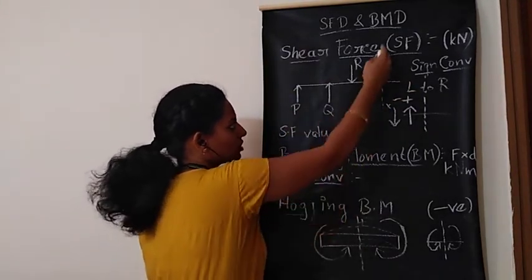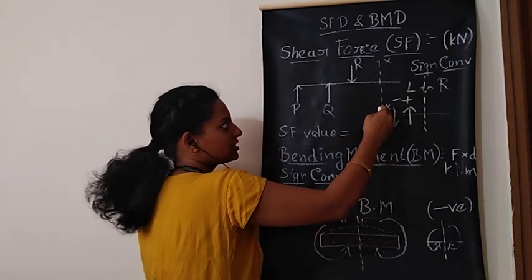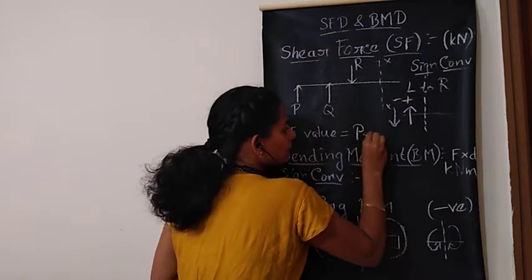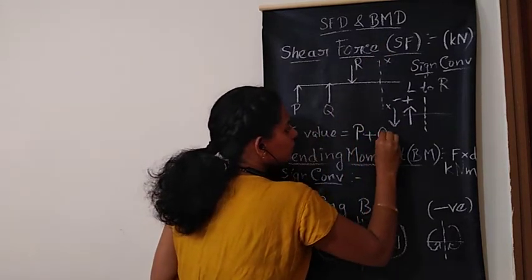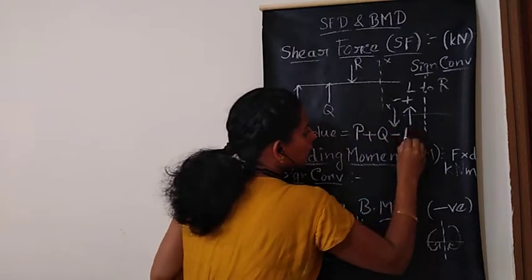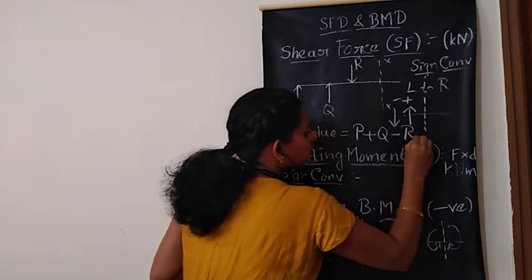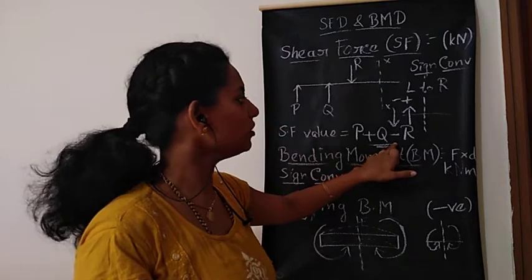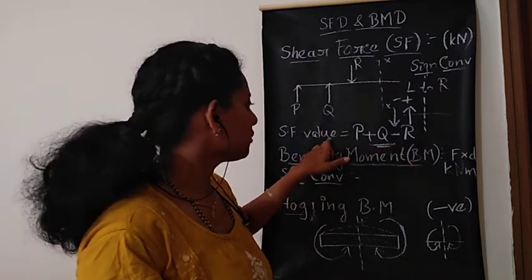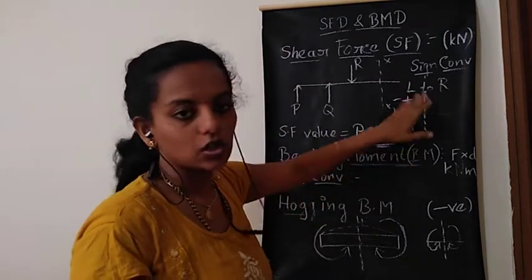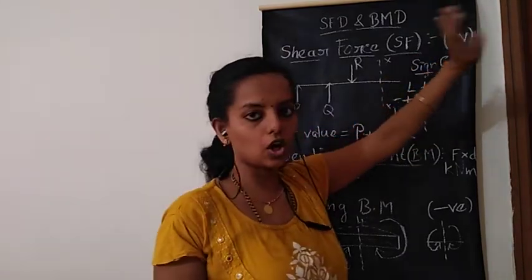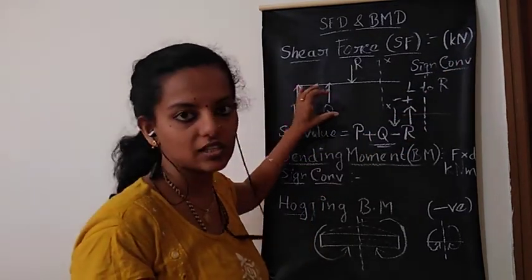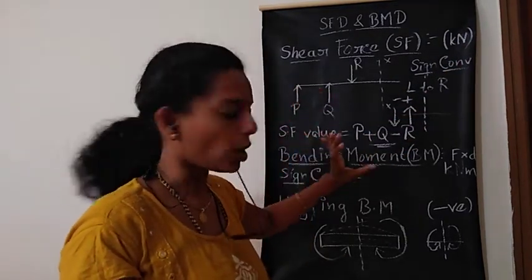That is, your upward is positive, your section is here. So it will be P plus Q minus R. This will be the shear force value, and for the shear force value, your unit will be kilonewton or newton according to the force present in the problem.